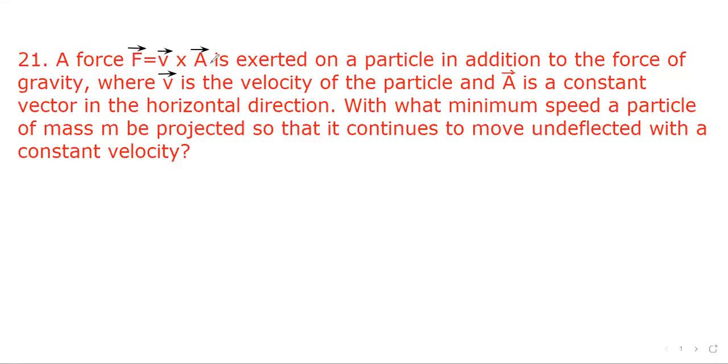If force F equal to V cross A is exerted on a particle in addition to the force of gravity, where V is the velocity of the particle and A is a constant vector in the horizontal direction, with what minimum speed a particle of mass m will be projected so that it continues to move undeflected with a constant velocity?